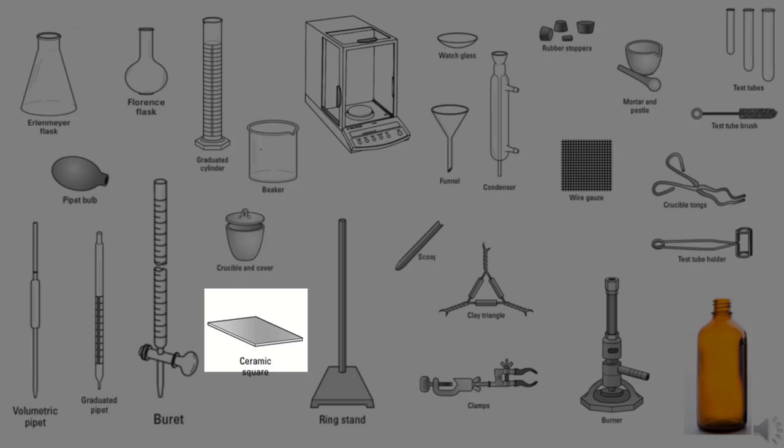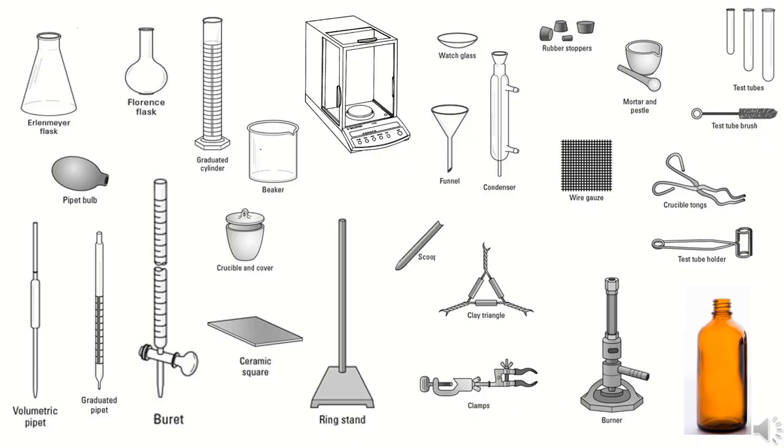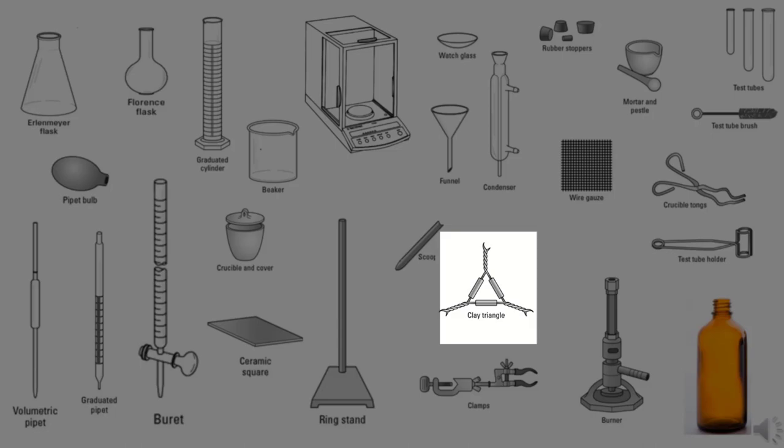Ceramic square, used to avoid burning the surface of your lab bench. Clamps, used to hold a variety of things in place particularly test tubes. Clay triangle, used to hold a crucible. Condenser, used to collect vapors by condensing them into liquid as they contact the liquid cooled inner surface of the condenser.